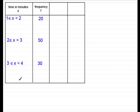In this column I've got the time in minutes x taken to do a particular task by a number of students. Now the frequency f, the number of students that took more than or equal to 1 minute but less than 2 minutes was 20. And 50 students took more than or equal to 2 minutes but less than 3 minutes to do the task. And so on.